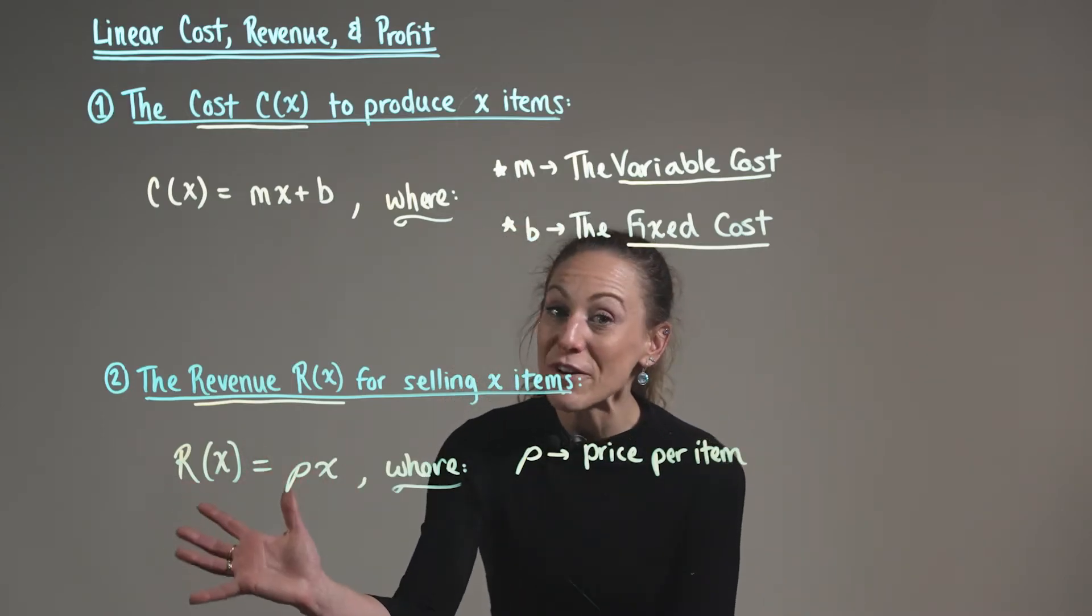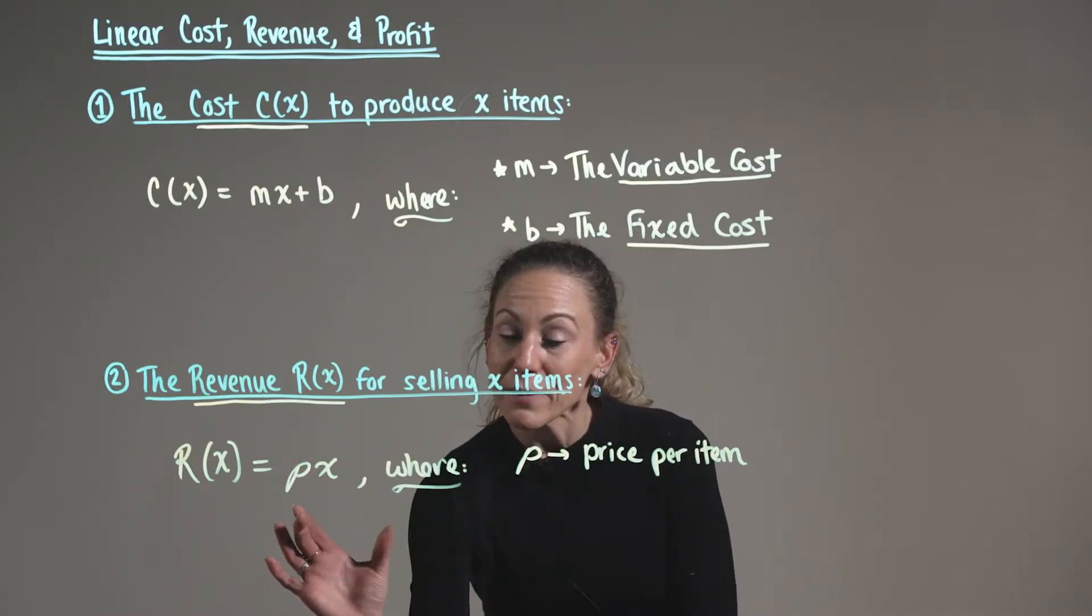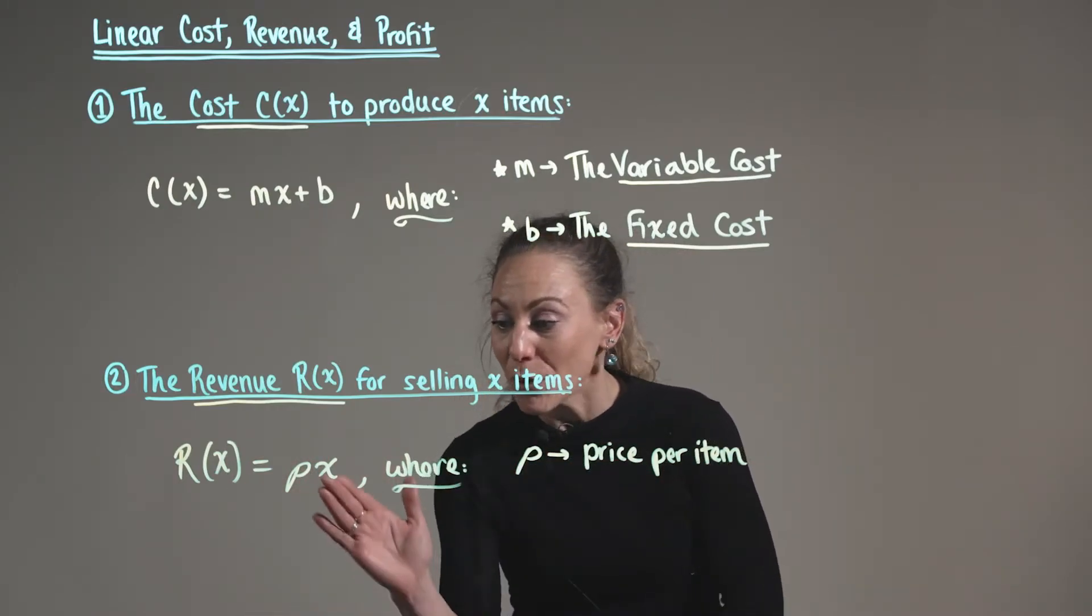We can see that our revenue function is represented as the price per item, p, multiplied by the number of items sold, x.